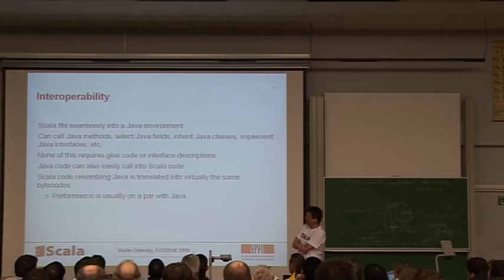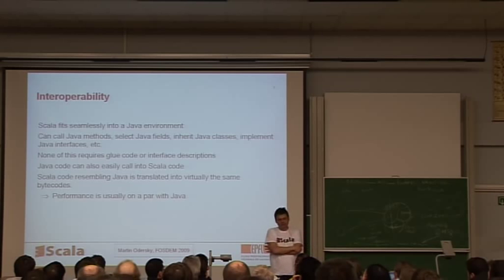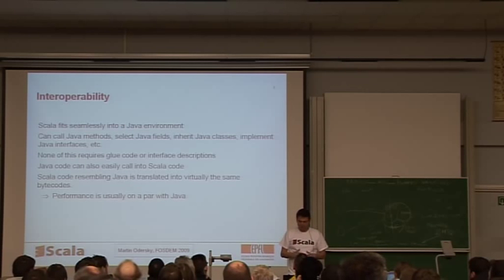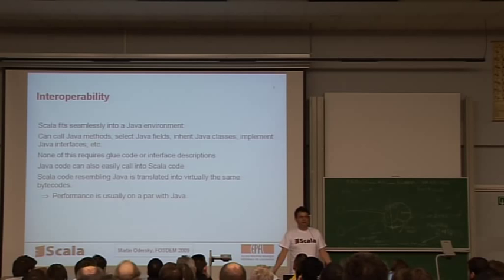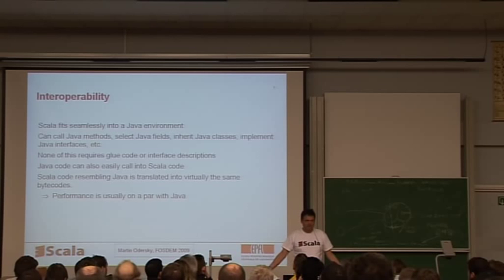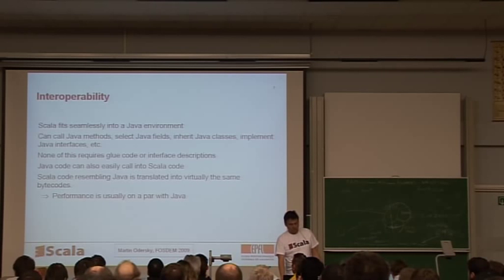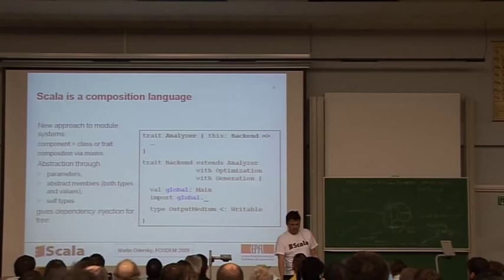So to look at interoperability, the whole thing fits seamlessly into a Java environment. You can call Java methods, select Java fields, inherit Java classes, implement interfaces, and so on. There's virtually nothing that doesn't work completely without any protocol. So you don't need any glue code, interface description, nothing. In the end, a Scala program or Scala application is just another Java library. It compiles into class files, it gets deployed as jars, and at runtime, there's virtually no difference between the two. And for all that reason, it's also the case that the performance is usually on a par with Java.